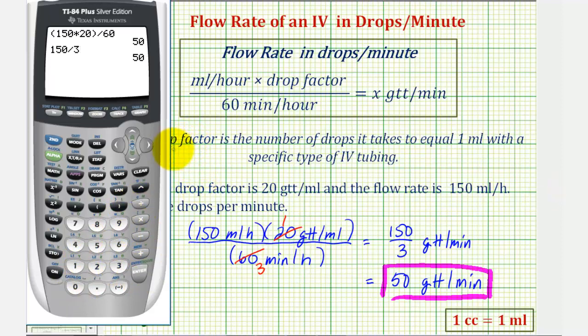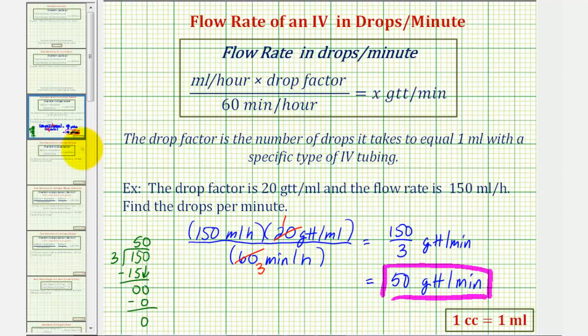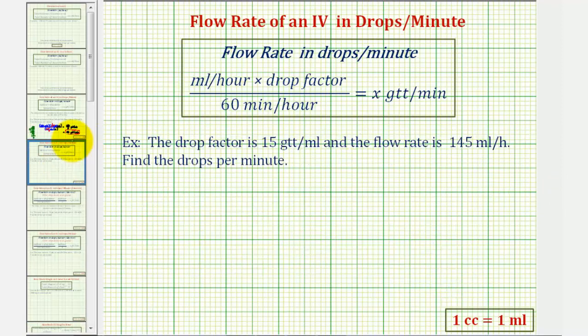Let's take a look at another example, where we actually have to round. Here, the drop factor is 15 drops per mil, and the flow rate is 145 mils per hour.